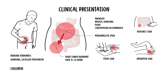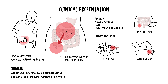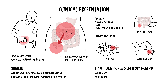Children may present differently, with nonspecific abdominal pain, irritability, fever, or gastrointestinal symptoms such as vomiting or diarrhea. Diagnosis in this group can be delayed due to atypical features and limited communication. Elderly and immunosuppressed patients may present with subtle signs and are more prone to complications.